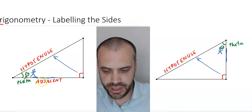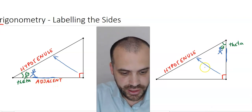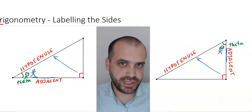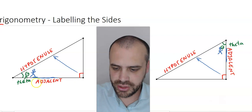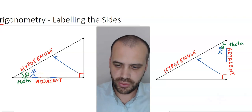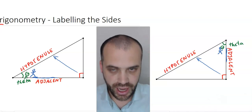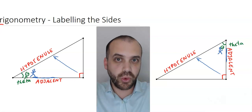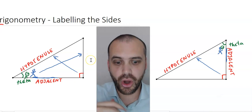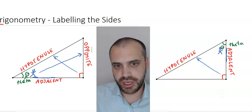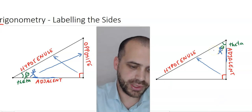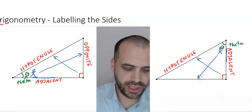When the angle of interest is here, this is the adjacent side, and in this other triangle this is the adjacent side. The word adjacent just means 'next to' — it's the side next to the angle of interest. The wall you can't touch is called the opposite, because it is opposite where you're standing — it's opposite the angle of interest.